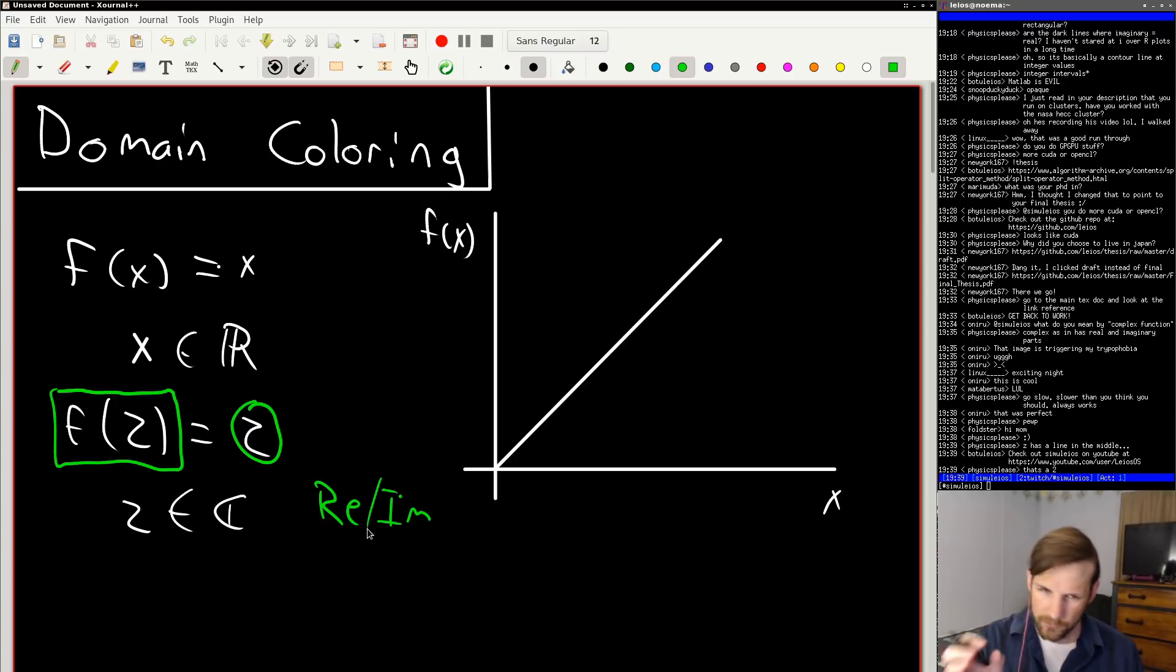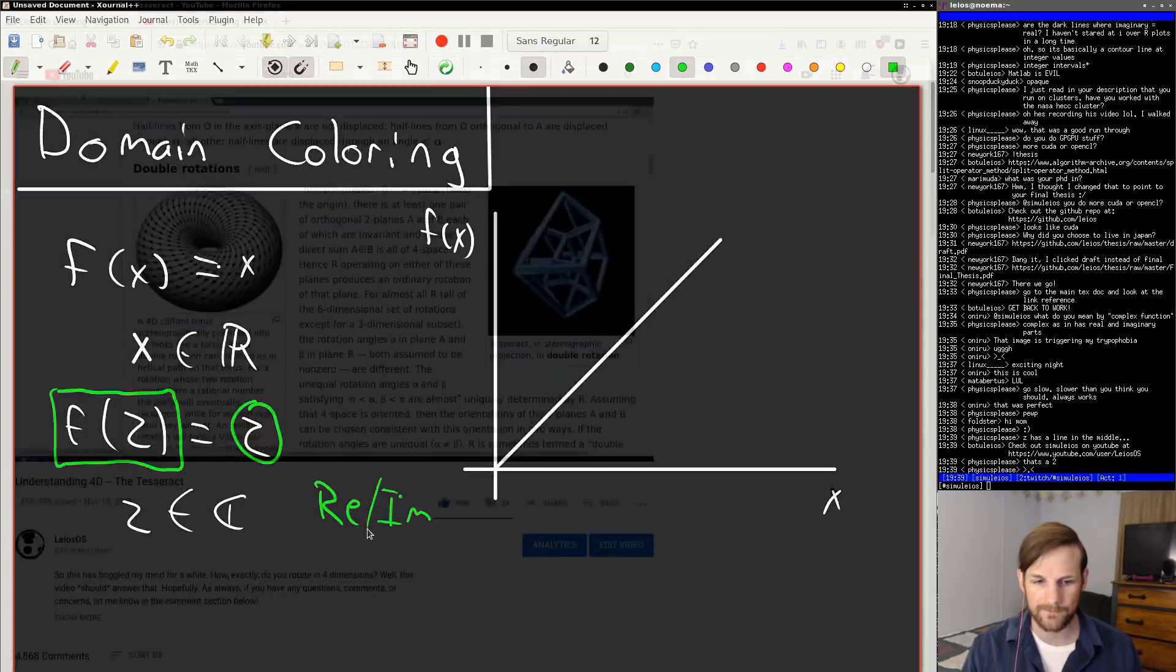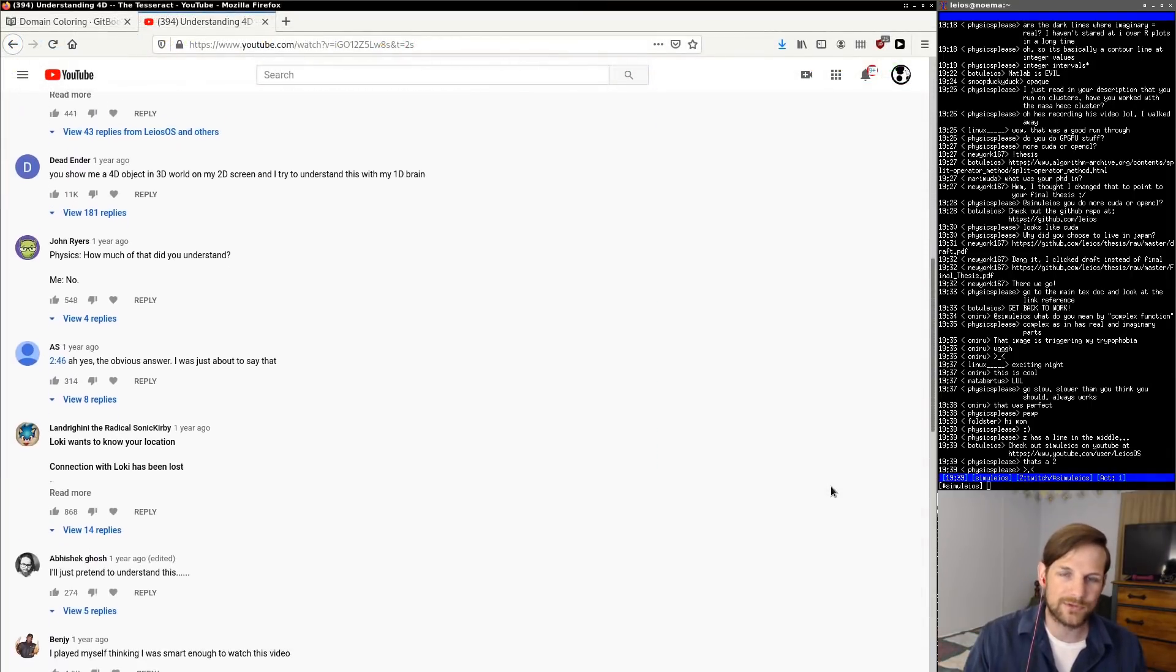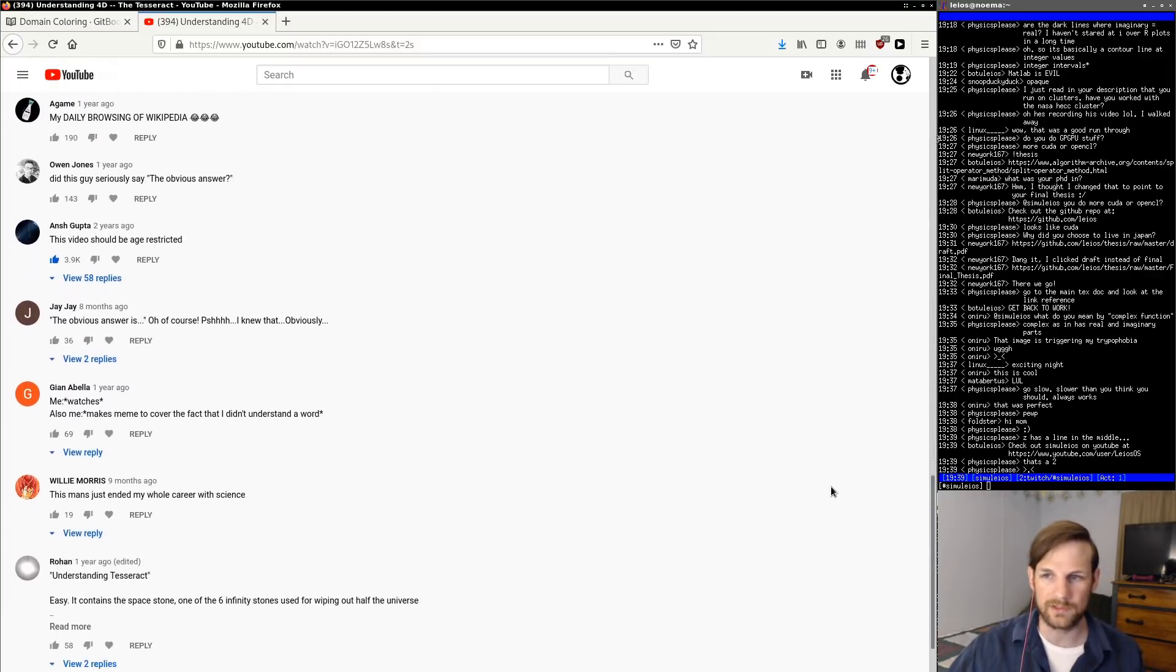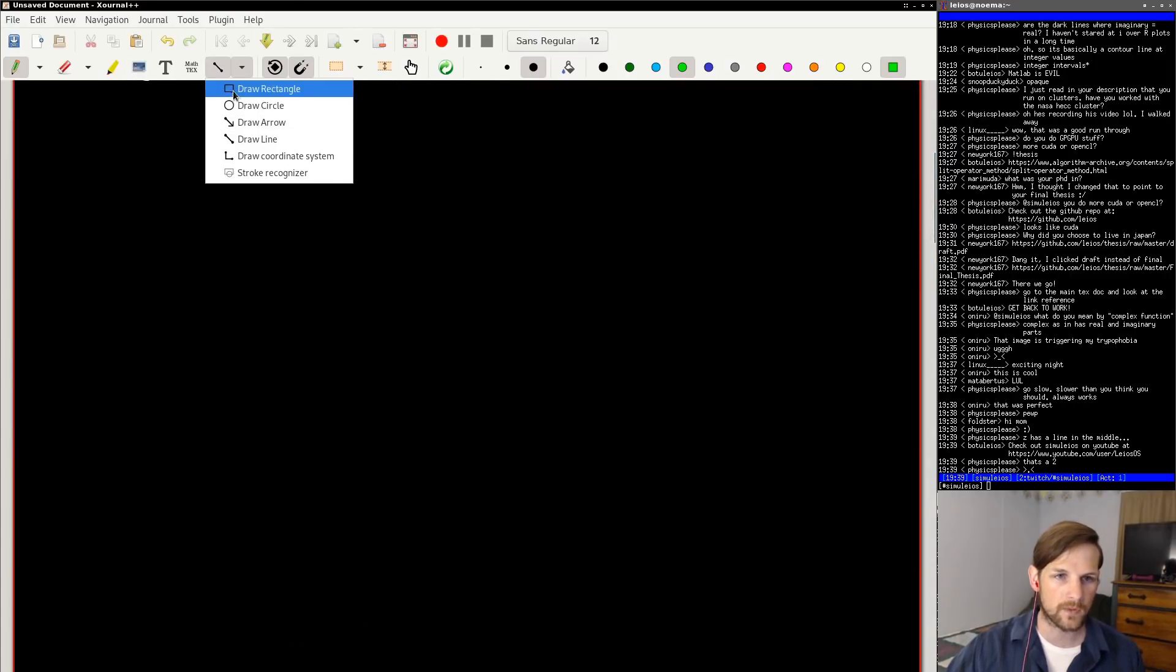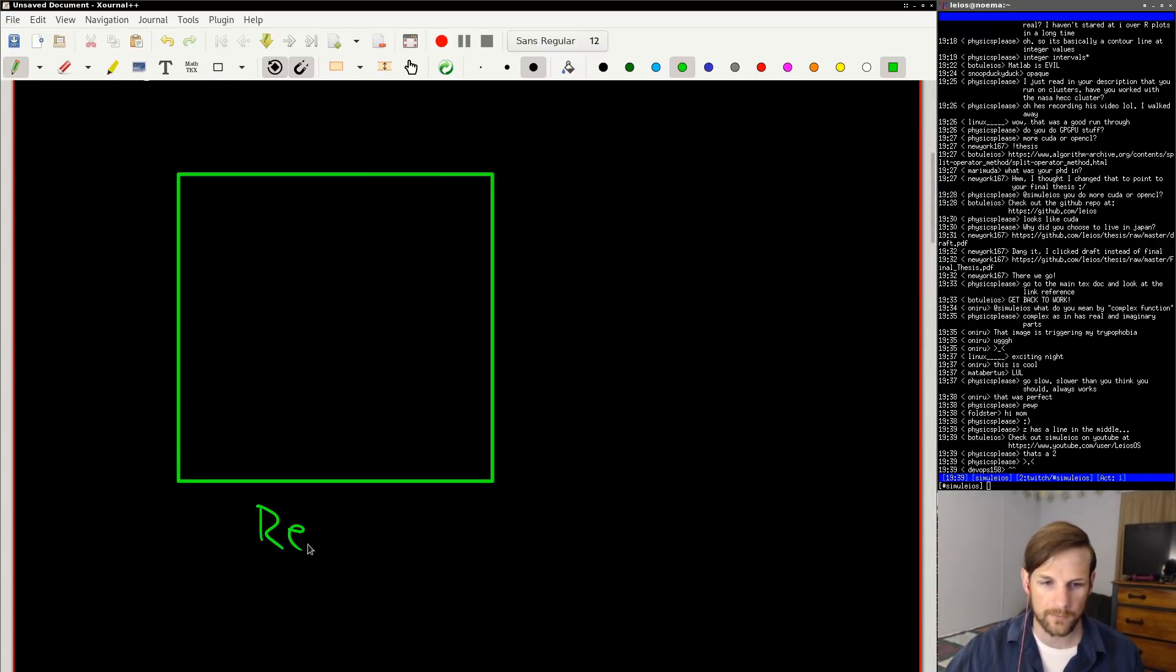Which means that in order to appropriately plot this we're going to need essentially four dimensions. And if my YouTube comments have taught me anything it's basically impossible to understand four dimensions in any intuitive way. So what exactly do we do? Well we do kind of the same thing we did before. So first we draw some sort of two-dimensional grid and on the x-axis we put the real component to our input variable z. On the y-axis we then put the imaginary component of our input variable z.